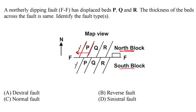The beds in the north block have shifted towards the west direction, as in the question. So our other answer would be a reverse fault. A normal fault will not be the case — it would give the opposite result, where the beds in the north block shift towards the right. In case of a dextral fault also, the beds in the north block would have shifted towards the right.